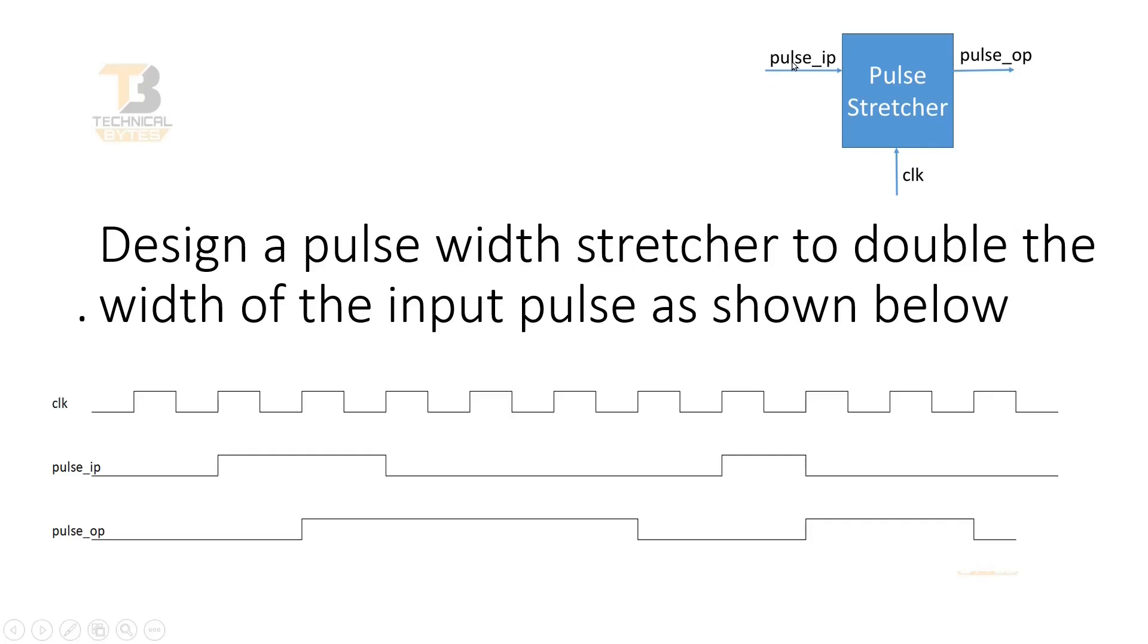On this Pulse Input, there will appear the pulses of any number of clock cycles. And corresponding to that Pulse, this Pulse Stretcher will generate a Pulse at the Pulse Output signal and the width of the Pulse at the Pulse Output signal should be double the pulse appearing at the Pulse Input signal. Let me show you with the help of the diagrams. This is the clock input. This is the Pulse Input.